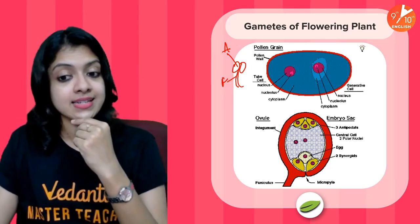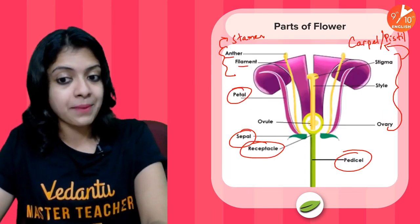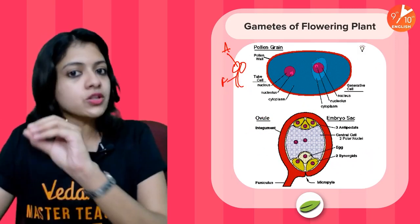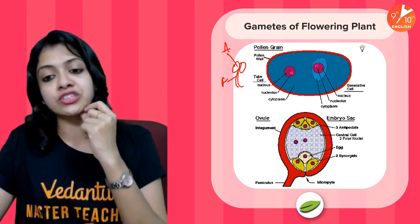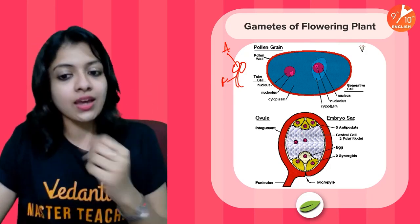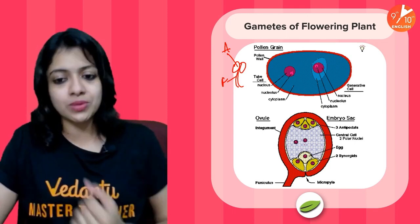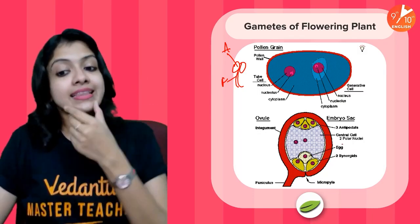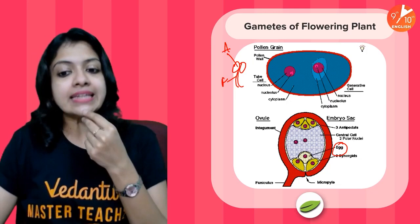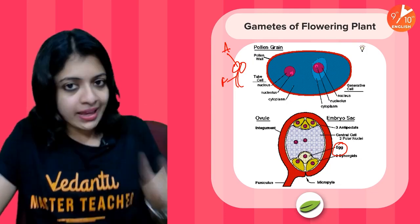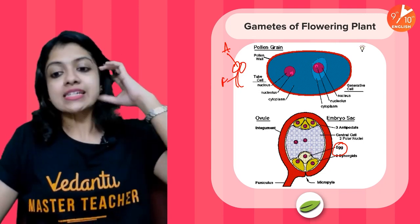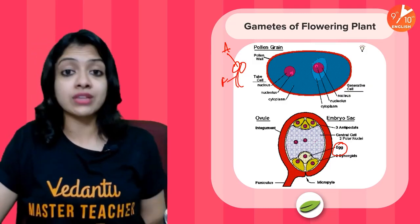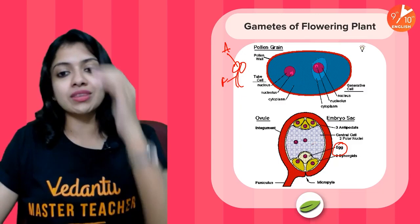As far as the female gamete is concerned, remember the ovary — the swollen base part — within which there is the ovule. This ovule is shown in a zoomed-in image. Within the ovule there are many different structures, but the most important thing to note here is that the egg cell, or the ovum, is placed inside the ovule. The number of ovules may vary from species to species, but it is within the ovule that you find the egg, and the ovule is part of the carpel or pistil.